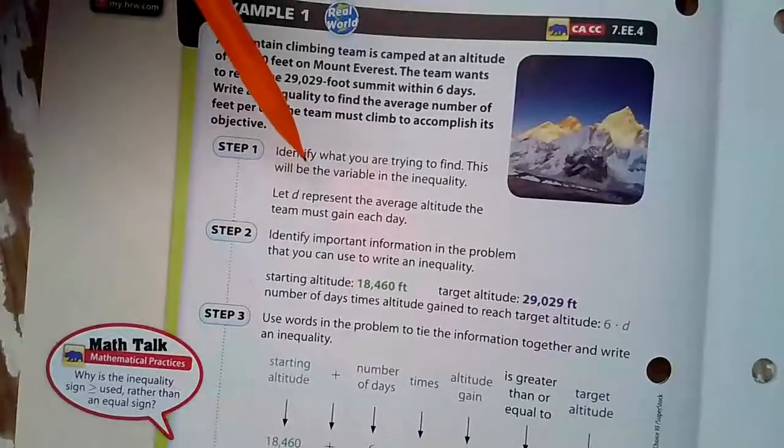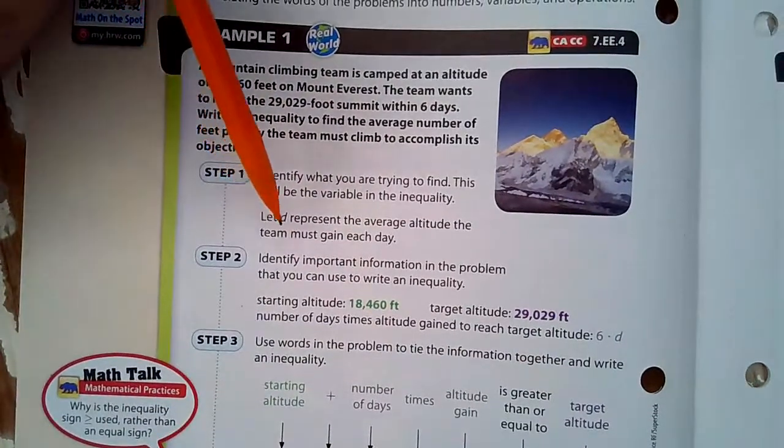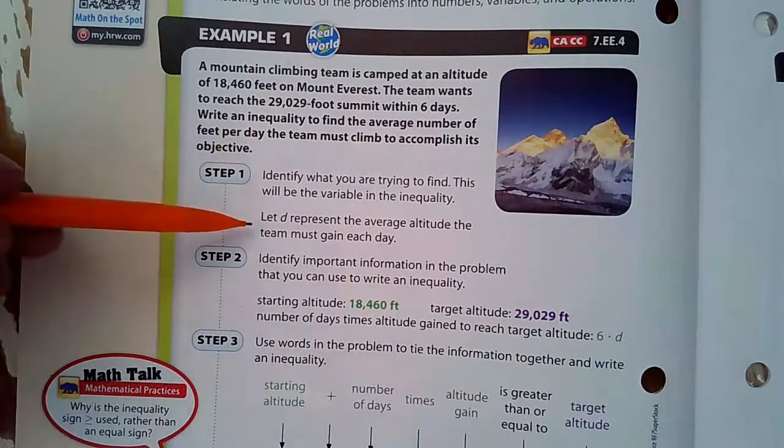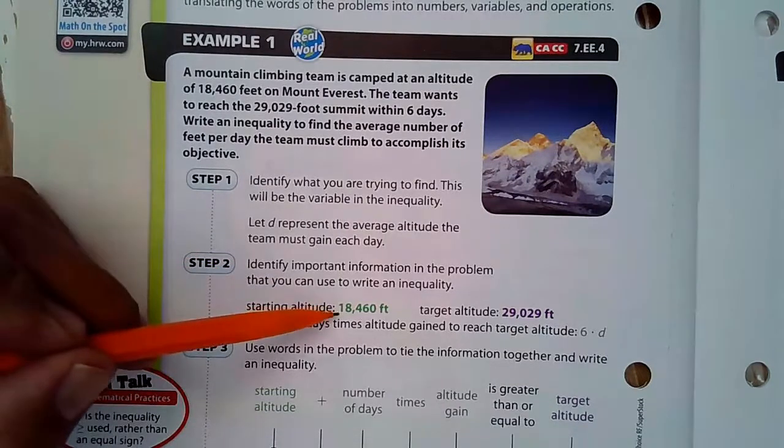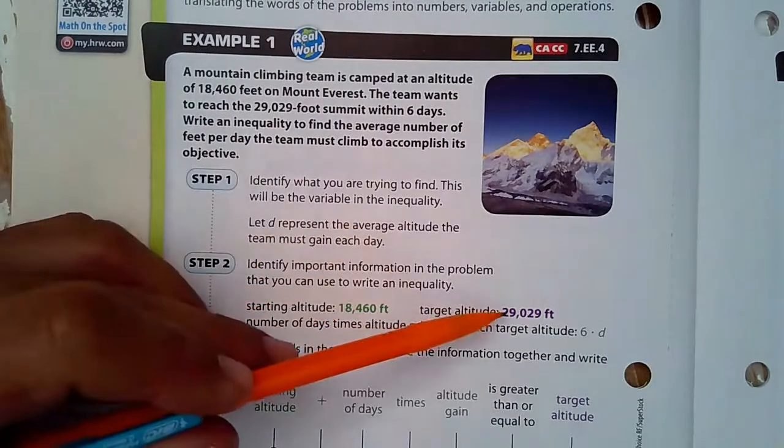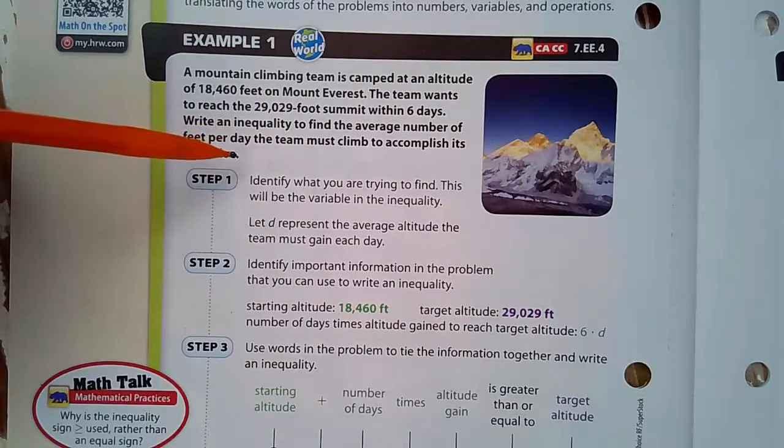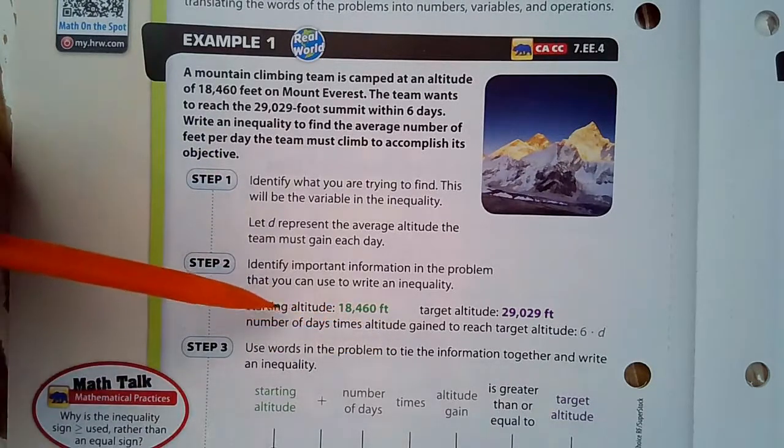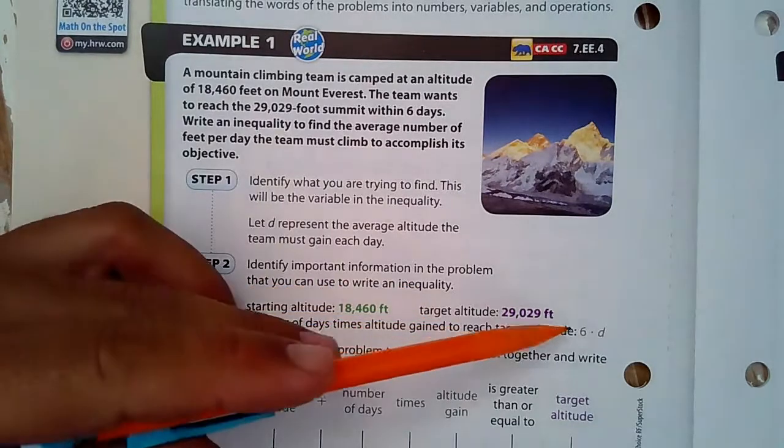So we need to identify what you're trying to find. This is going to be our variable in the inequality. D is going to represent the average altitude the team must gain each day. And so we're going to identify the important information: we're starting at 18,460 feet, our target is 29,029 feet. That's all taken from this paragraph here.